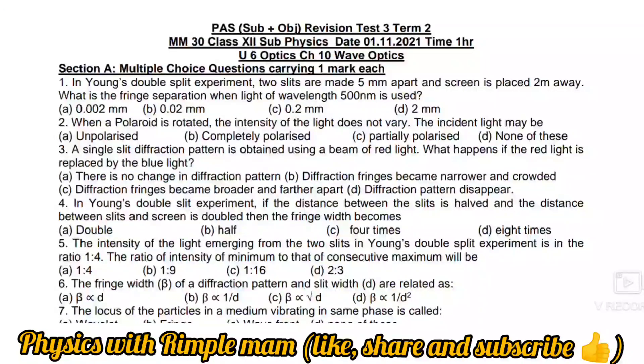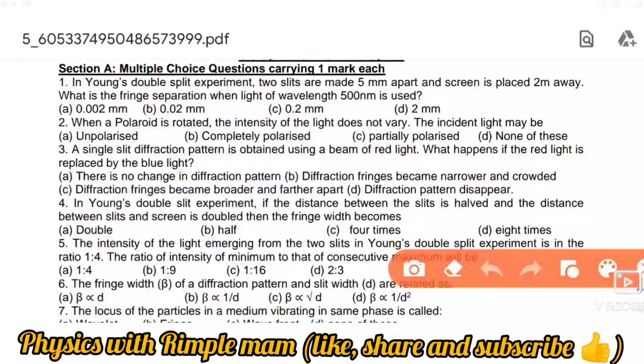Question number one: In Young's double slit experiment, two slits are made five millimeters apart and the screen is placed two meters away. What is the fringe width when light of wavelength 500 nanometers is used? We need to convert nanometers to meters, so that's 500 into 10 raised to the power minus nine meters. We have to find fringe width beta.